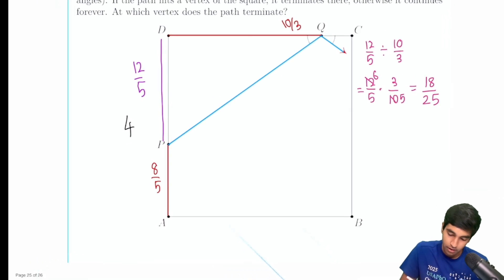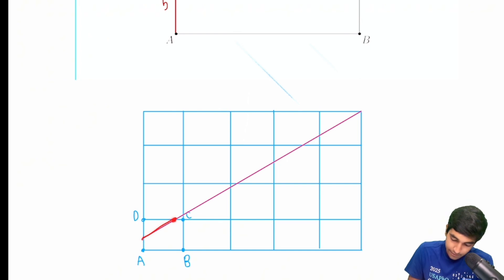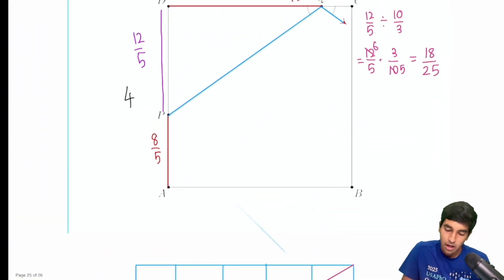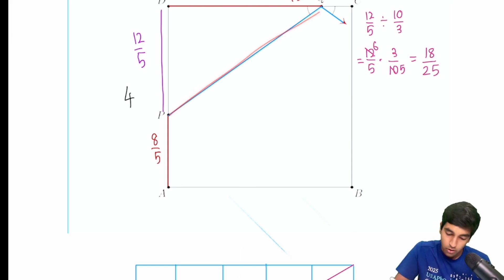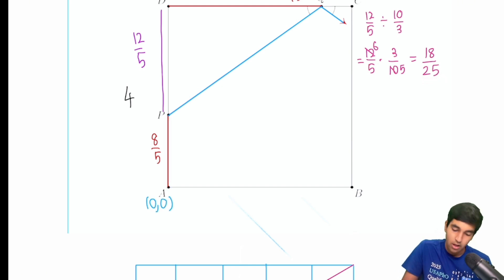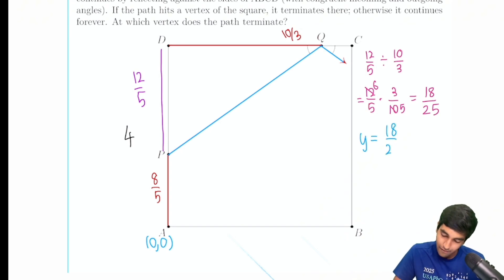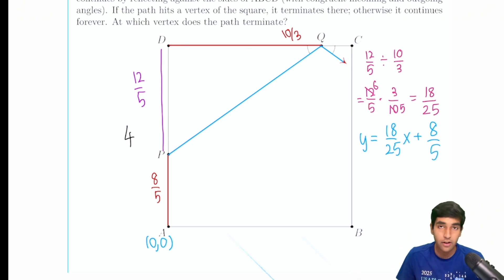Let's write an equation for this line. We're going to keep continuing it — whenever it hits a side, rather than reflecting, we just continue outward. The slope is 18/25, and if we say the starting point P is at (0, 0), the y-intercept is 8/5. So the equation of our blue line is y = (18/25)x + 8/5.